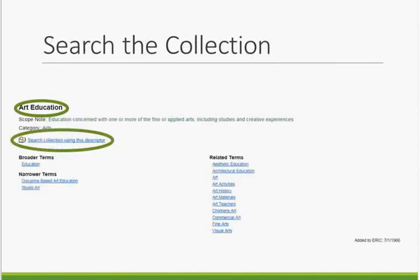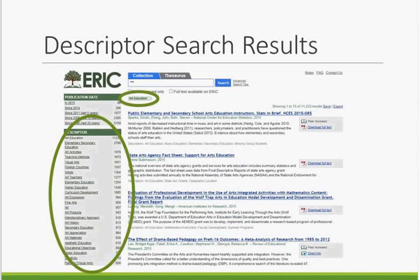Once you've found the descriptor you want — whether through browsing or searching — you can use it to search the ERIC collection. Just below the category section, you will see a link that says 'Search collection using this descriptor.' Simply click on the link and the search is automatically generated for you. In this slide, we can see the search results for the descriptor 'art education,' showing every record in ERIC indexed with that descriptor. From here, you can use the techniques discussed earlier to refine your search using other descriptors.